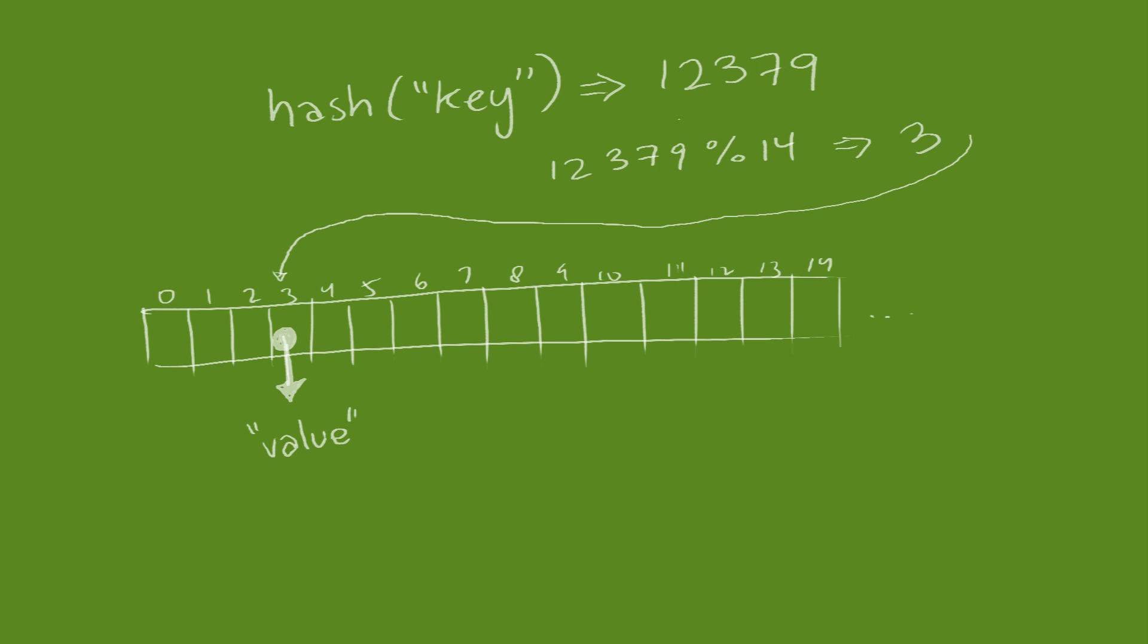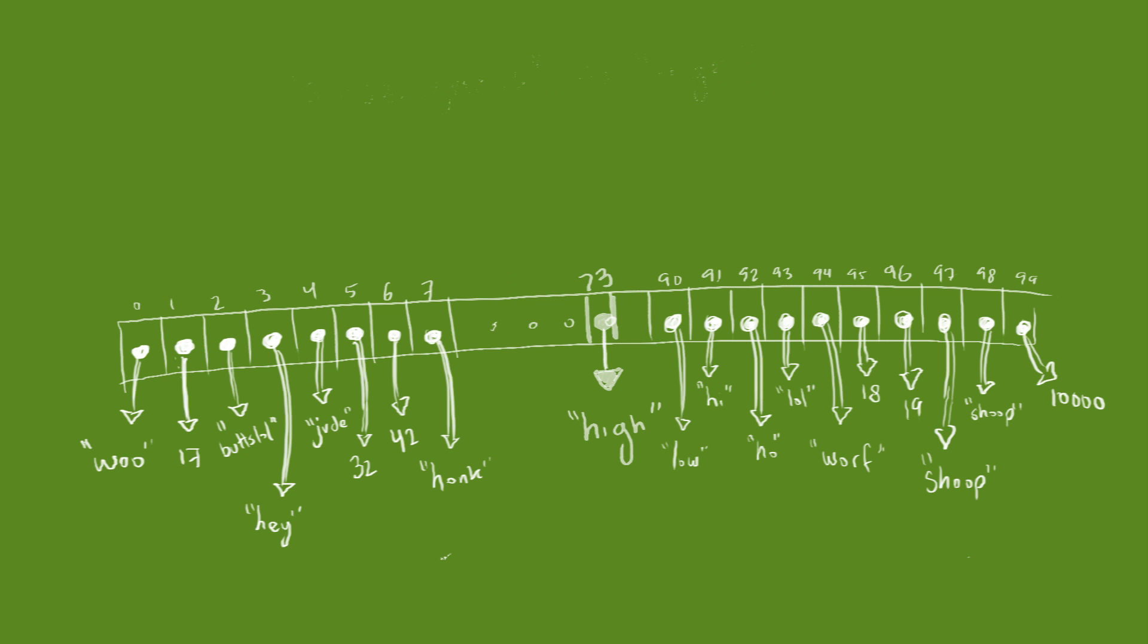Okay, it's not quite that simple. With a 100 element array, the chance of a collision approaches one as we approach 100 elements in our hash table. How do we handle a collision?